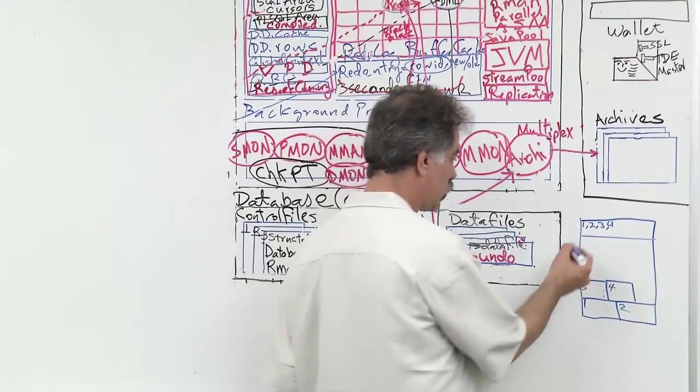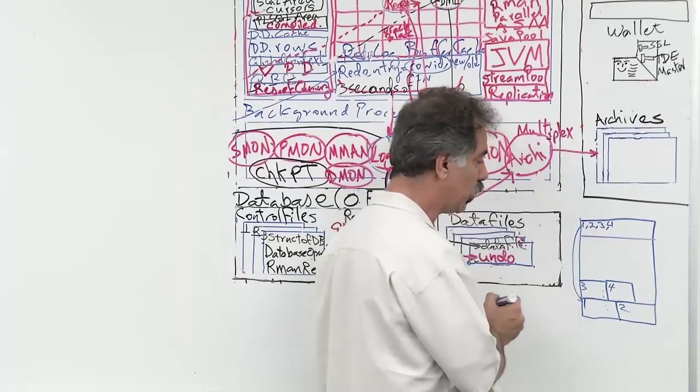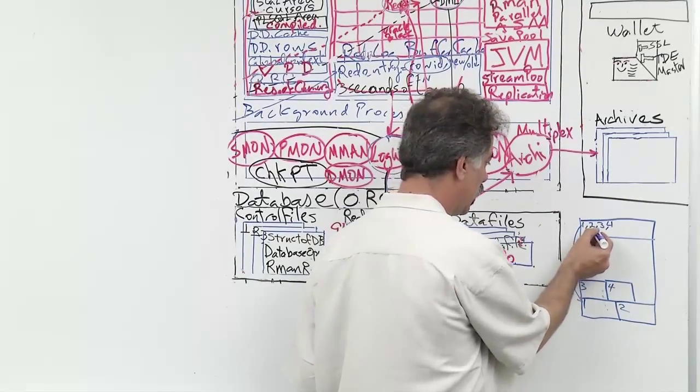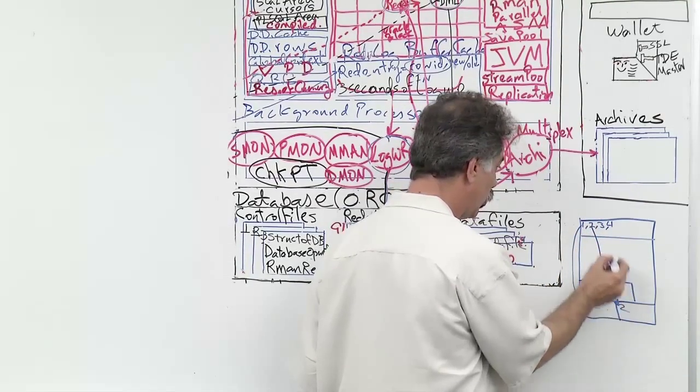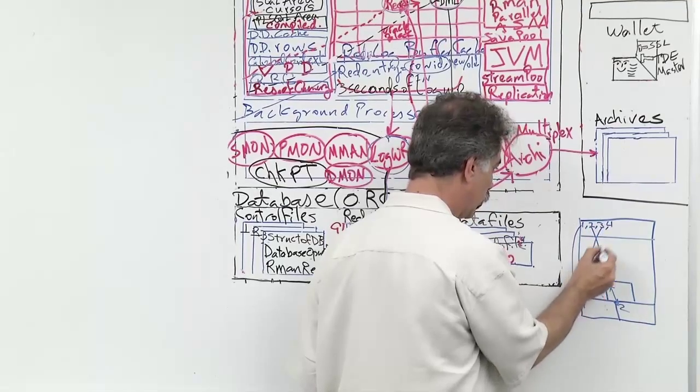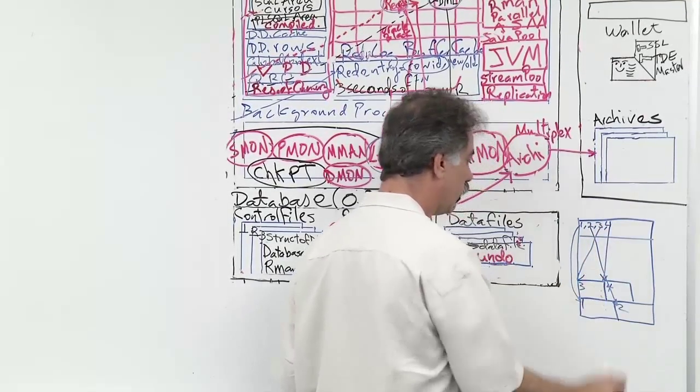So the first row to enter the block is row 1. This is a pointer to where that row starts. Then, pointer to row 2, pointer to start of row 3, pointer to start of row 4.